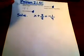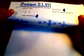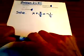Okay, so this is problem 2.1.51, and they are asking us to solve x plus 3/8 equals negative 1/4.